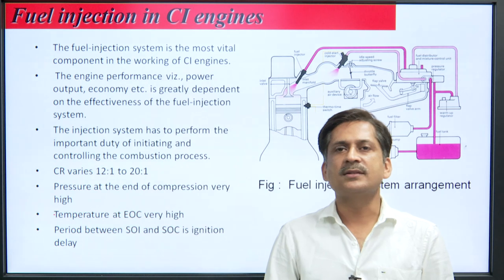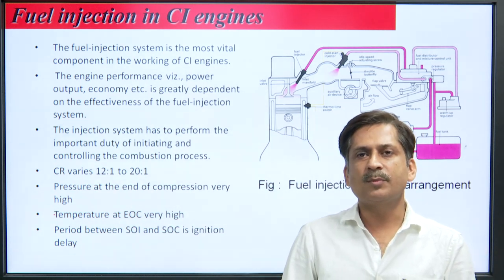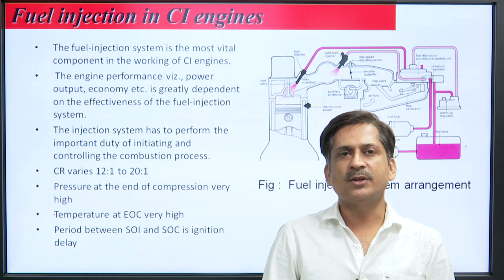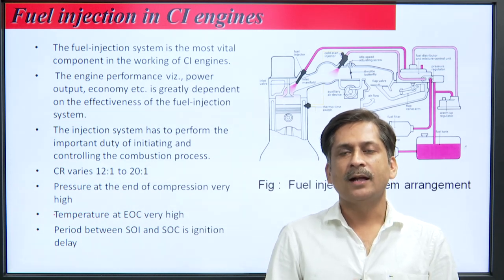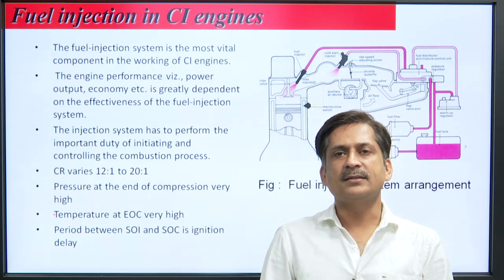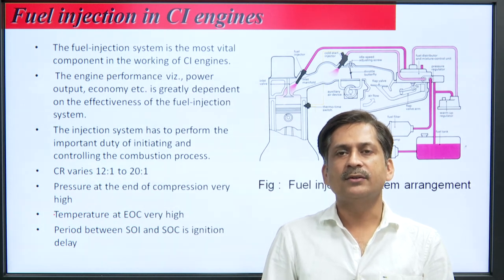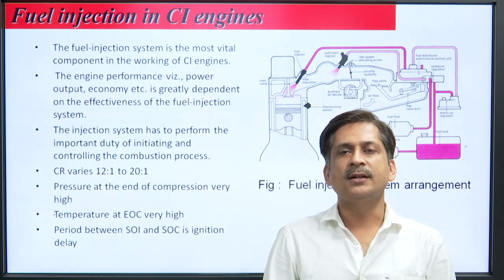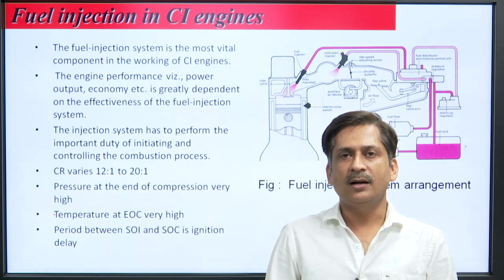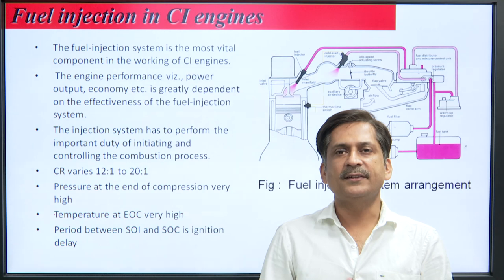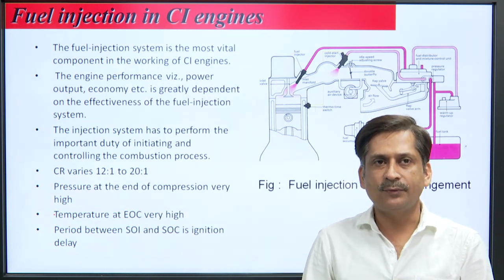The compression ratio in CI engines is based on the principle of compression ignition — the air is compressed at very high pressure using a very high compression ratio, which varies from 12 to 20. That high-pressure air has very high density compared to ambient air, about 12 to 20 times higher density. So you have to inject the fuel against such high pressure. The pressure developed at the end of compression depends on engine size, its RPM, whether it is a stationary or variable speed engine.